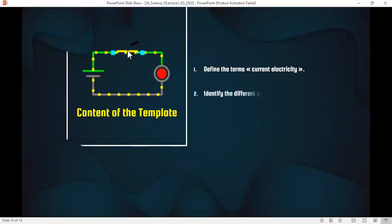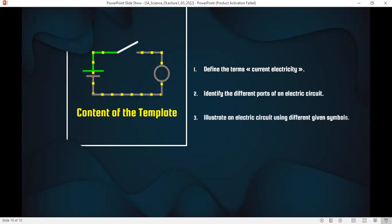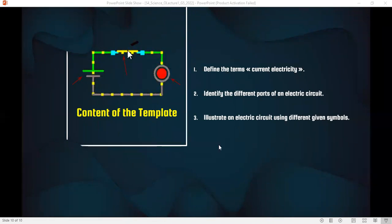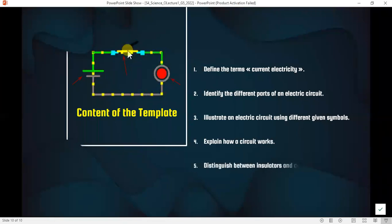Our lesson was about electricity, conductors, and insulators. Electricity is the flow of electrons in a circuit. In an electric circuit, you will find a battery, wires, a switch, and a device. You need to know how to draw an electric circuit using symbols: the symbol for the battery, the switch, and the light bulb — drawn as a circle with an X inside. Some objects are insulators, some others are conductors. Thank you for watching.